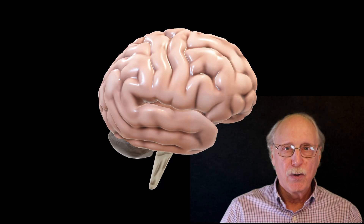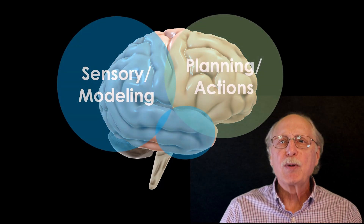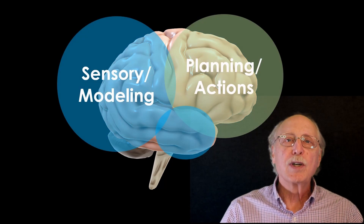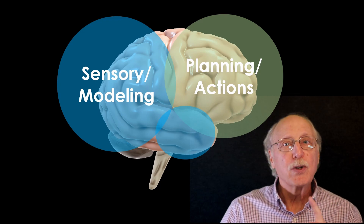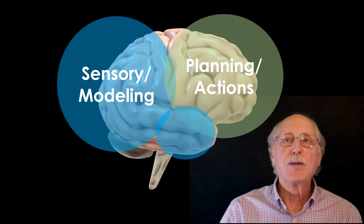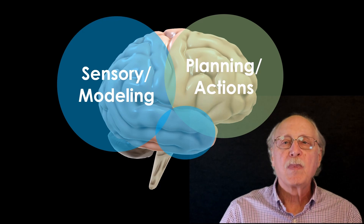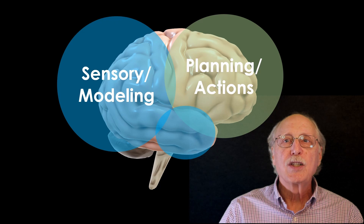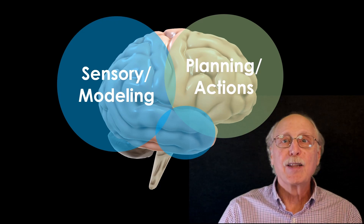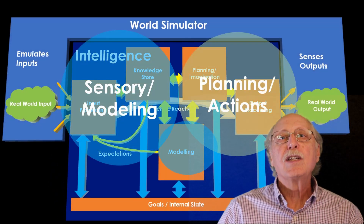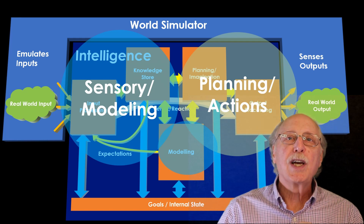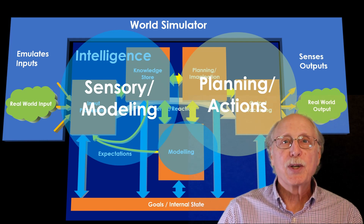In broad terms the human neocortex can be conceptualized in two parts. The back of your neocortex receives input from your various senses and is responsible for interpreting these into some sort of useful internal mental model. The front of the neocortex is responsible for planning what actions to take and taking them. The AGI model I'm implementing follows a similar pattern. This video focuses on the first half of AGI — perception — while implementation has already begun on the remainder.